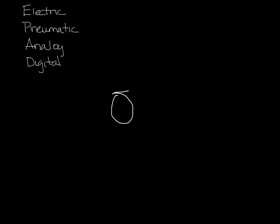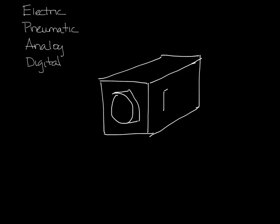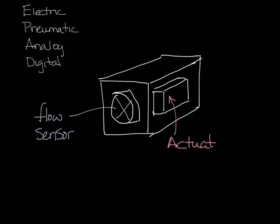So let's draw a single duct box. Here's the inlet and the casing. Draw on a control box. Okay, so there's a flow sensor in the inlet of the box measuring the flow. Inside the control box there's an actuator that opens and closes the damper and a controller that controls the actuator's operation.